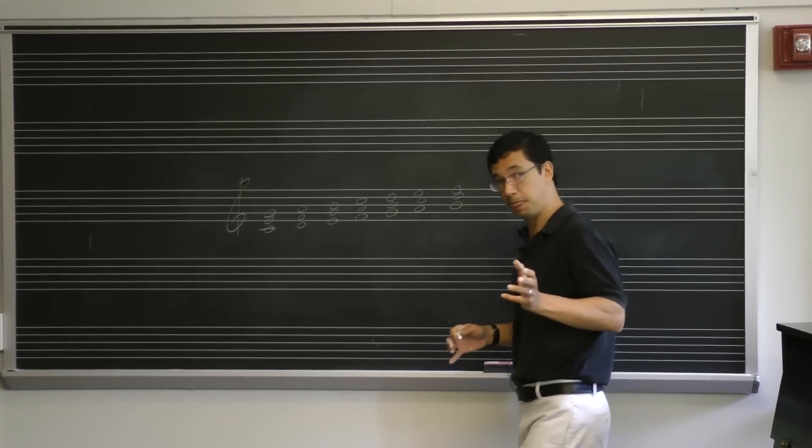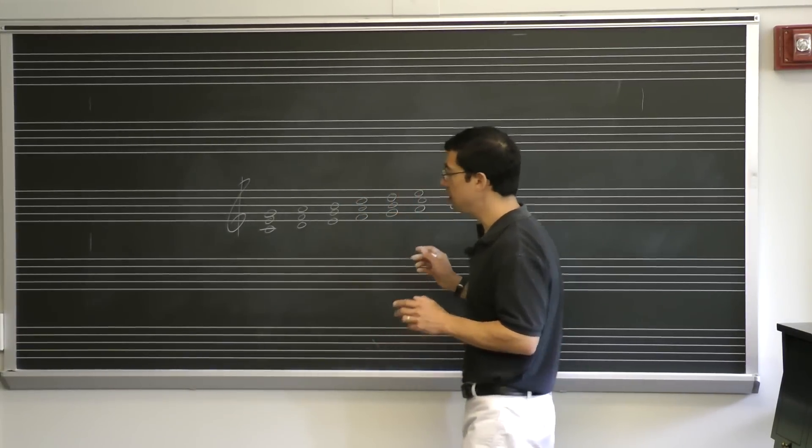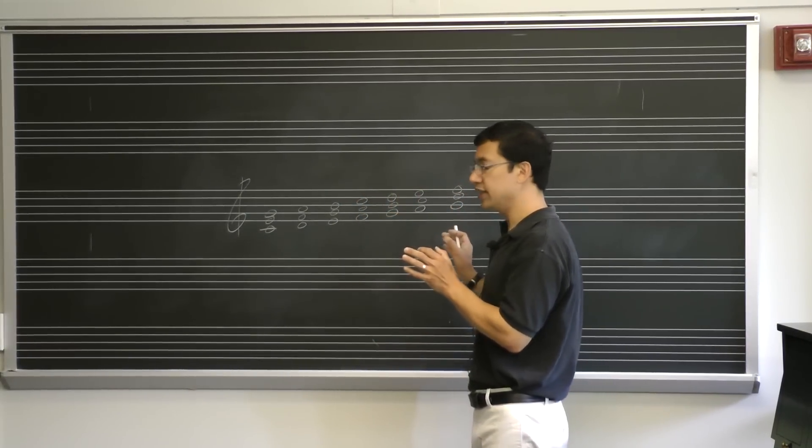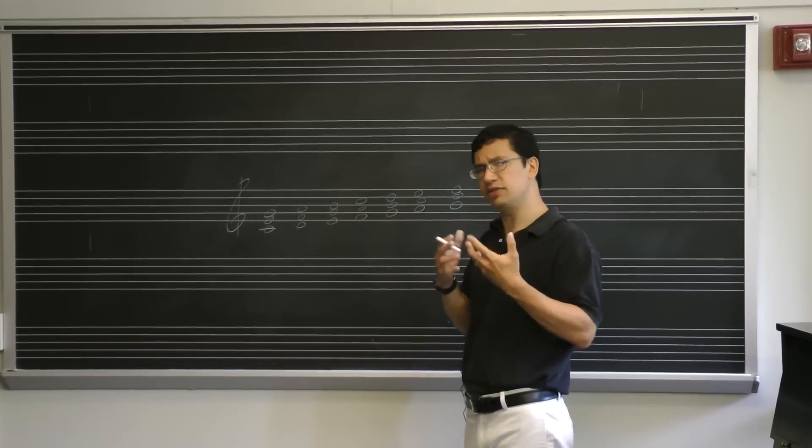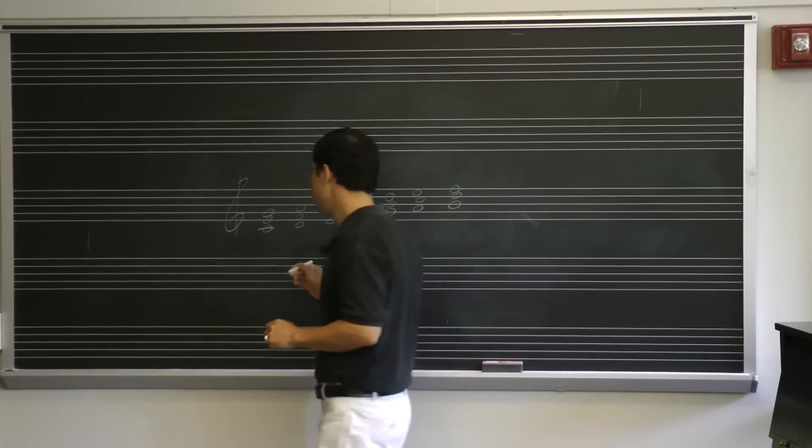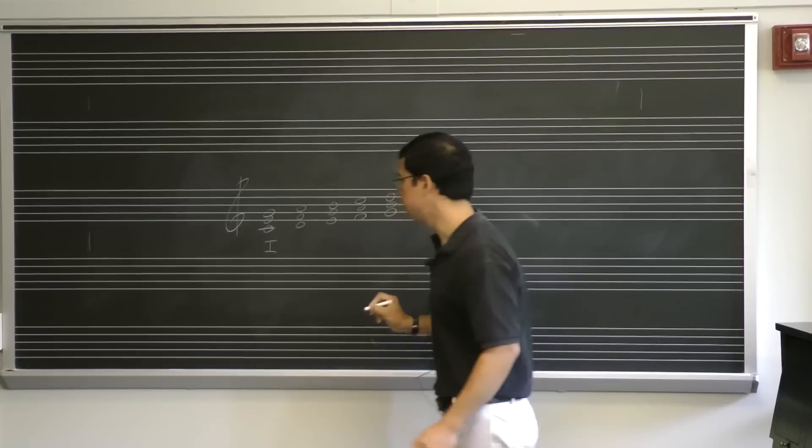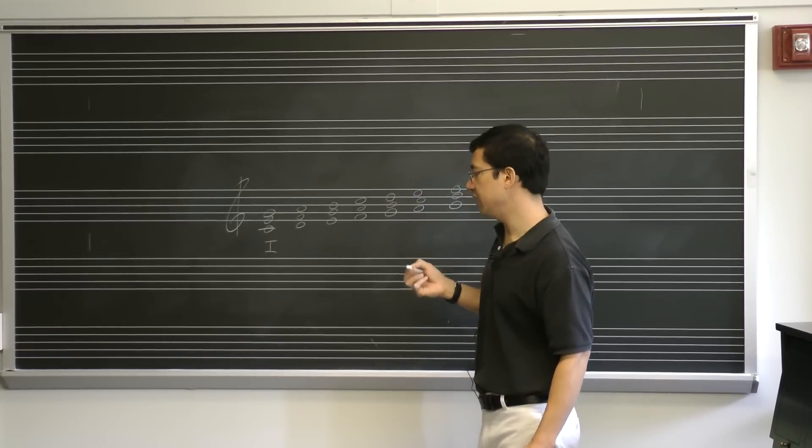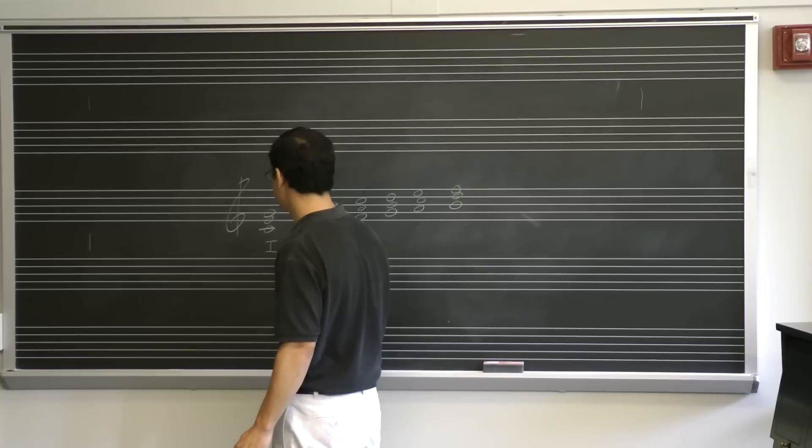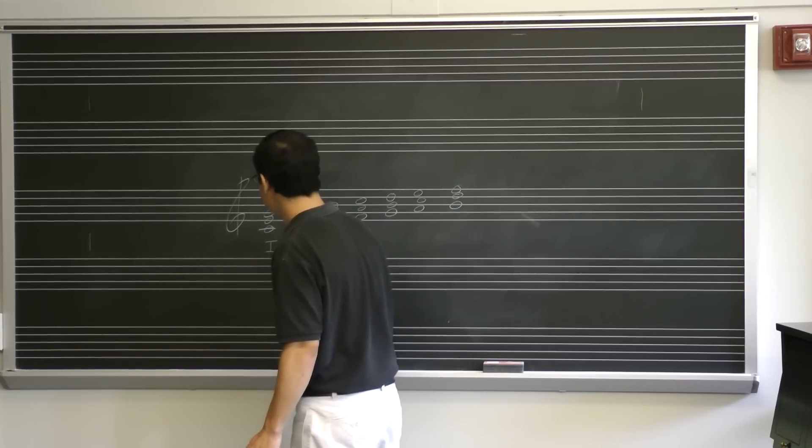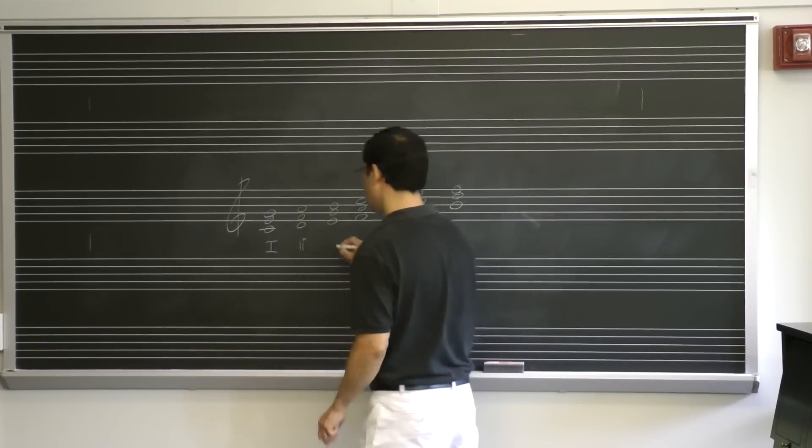Now they can also be numbered, except where we numbered scale degrees using carets, we're going to number triads using Roman numerals with some extra symbols to help us see what the qualities are. A major triad will always receive an uppercase Roman numeral. A minor triad will receive a lowercase Roman numeral. And you should be able to see based on your knowledge of intervals: major, minor, minor.